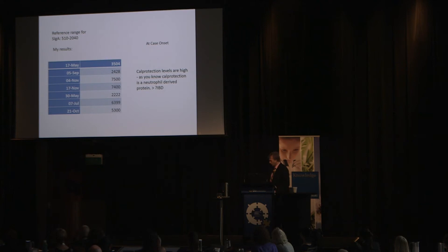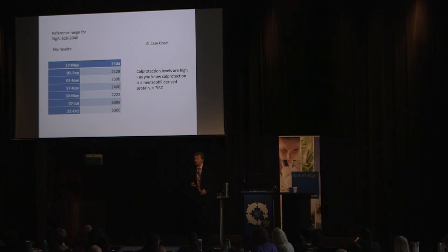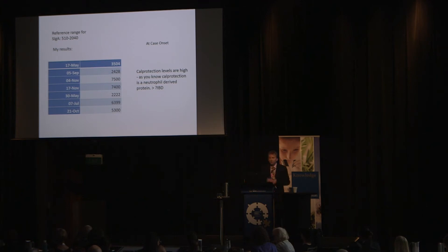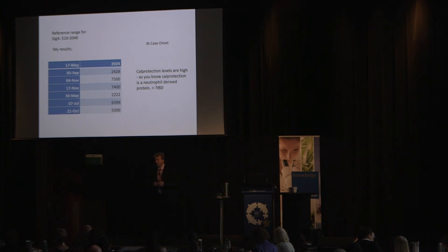His secretory IgA results: scores as high as 7,500 and 7,400, with low levels at 2,428. We're really looking for scores of between 150 and 200. So here's a massive outpouring of a soluble protein into the mucosal tissue. Why would somebody be producing that much immunoglobulin A? What is their body attempting to do? Fight infection, get rid of something — is it a food sensitivity? Possibility, but I've never seen someone with food reactivity at scores like that.